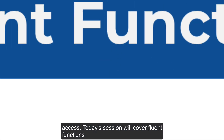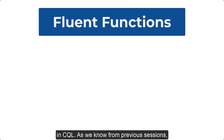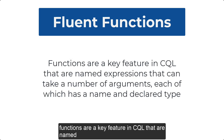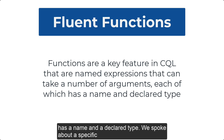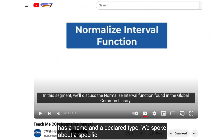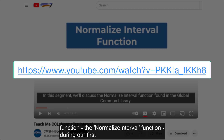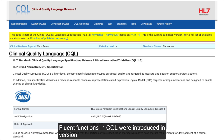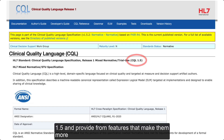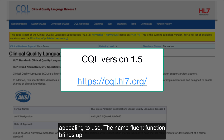Today's session will cover fluent functions in CQL. As we know from previous sessions, functions are a key feature in CQL that are named expressions that can take a number of arguments, each of which has a name and a declared type. We spoke about a specific function, the normalized interval function, during our first installment of the Teach Me CQL series. Fluent functions in CQL were introduced in version 1.5 and provide some features that make them more appealing to use.